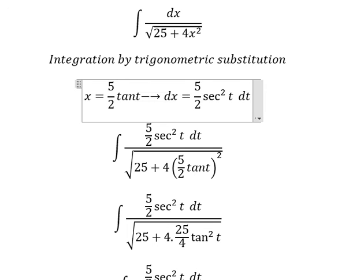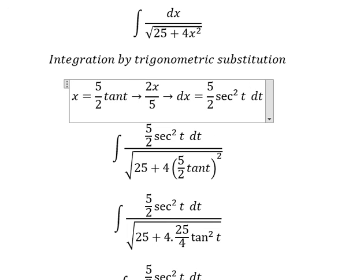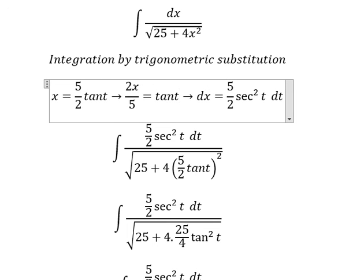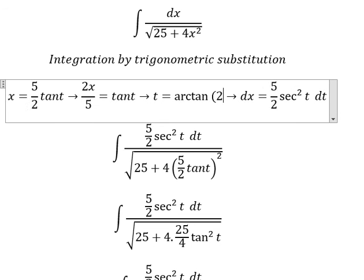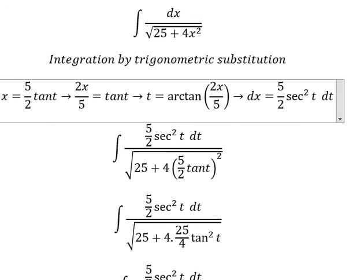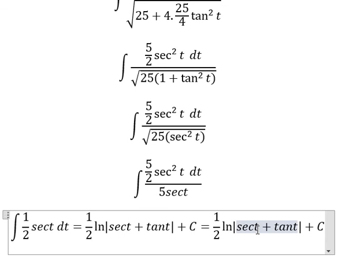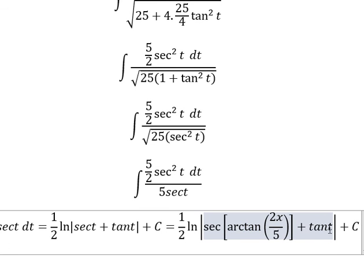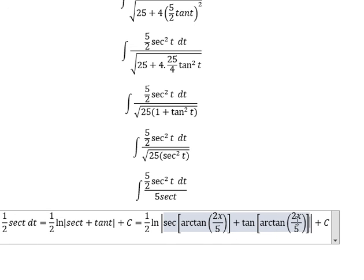Now we need to substitute back. From the original substitution x equals five over two tan t, we divide both sides by five over two to get tan t equals two x over five. Therefore, t equals arctan of two x over five. We use this to substitute back into our answer.